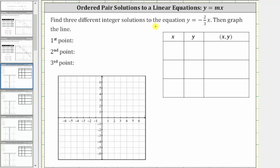We're asked to find three different integer solutions to the equation y equals negative 2/3 x and then graph the line. Each solution is an ordered pair in the form of x comma y that satisfies the equation y equals negative 2/3 x.